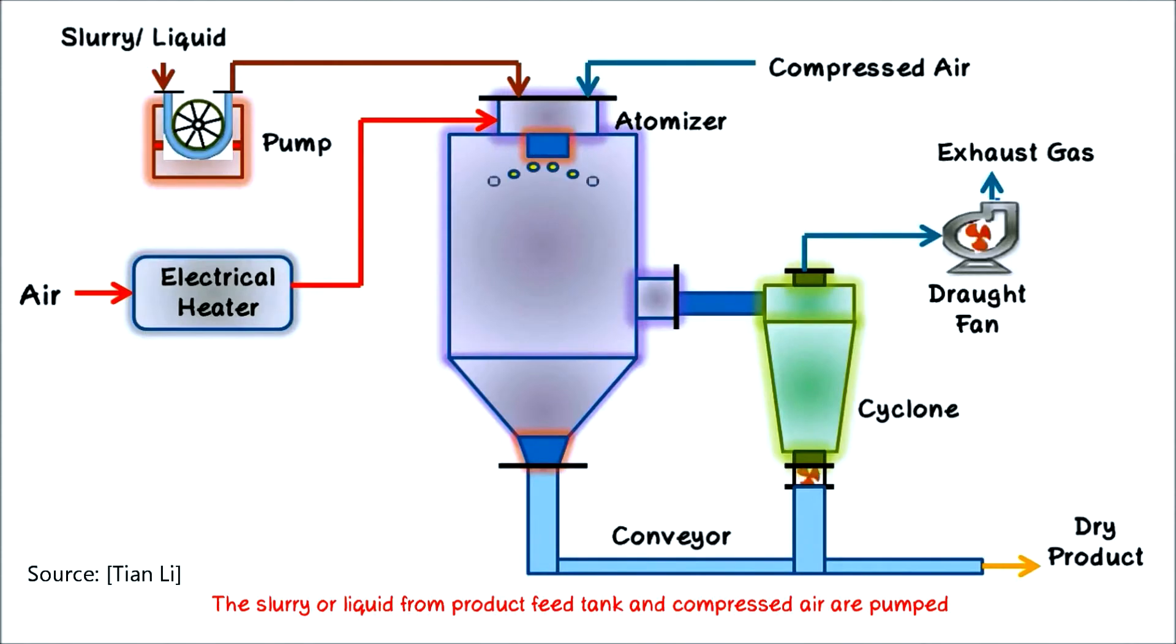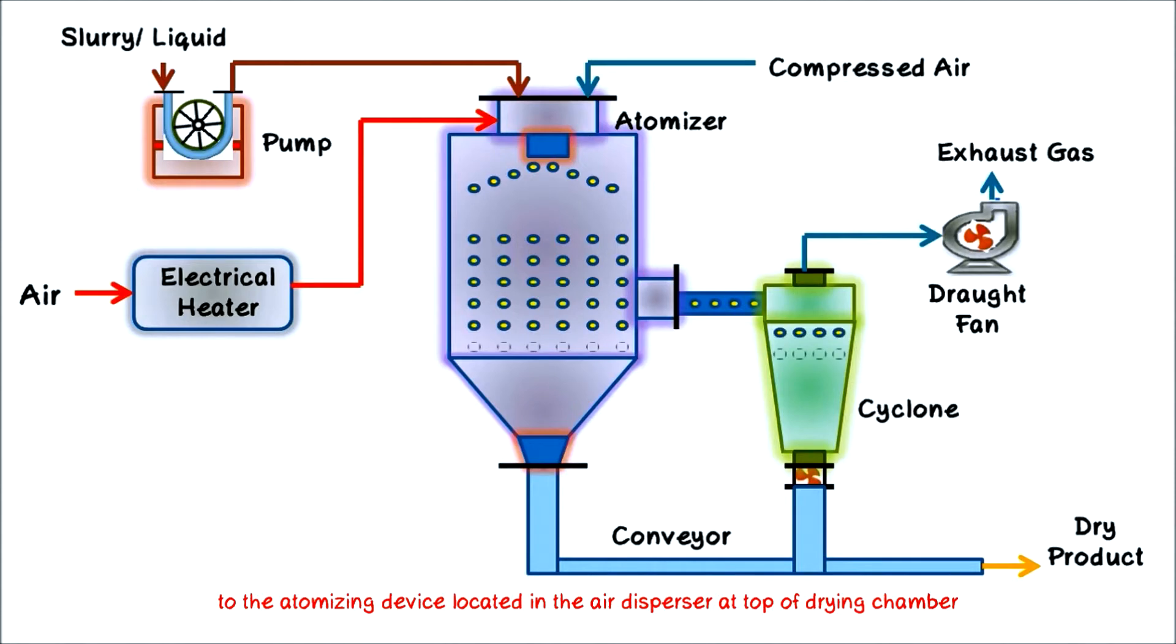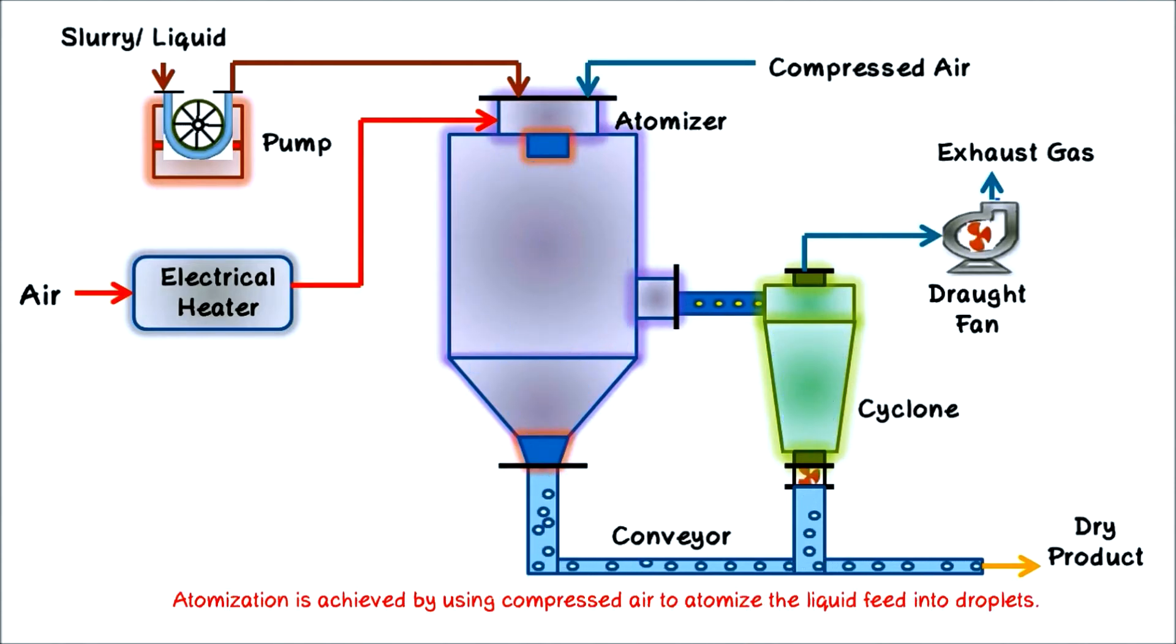The slurry or liquid from product feed tank encompasses air and is pumped to the atomizing device located in the air disperser at top of drying chamber. Atomization is achieved by using compressed air to atomize the liquid feed into droplets.